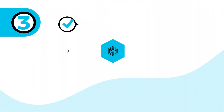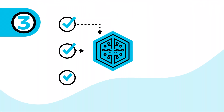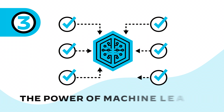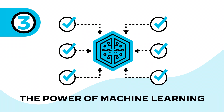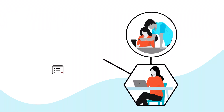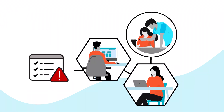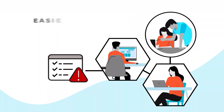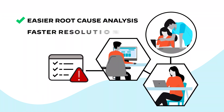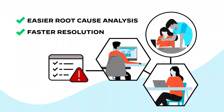In addition to enforcing right actions, the framework correlates events with the power of machine learning, allowing IT staff to automatically prioritize critical issues for easier root cause analysis and faster resolution.